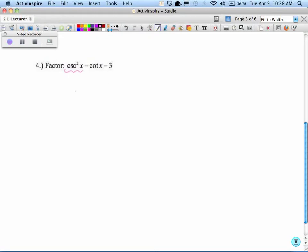But if you look at cosecant squared, what could you do? Look at that third Pythagorean identity. 1 plus cotangent squared is equal to cosecant squared.